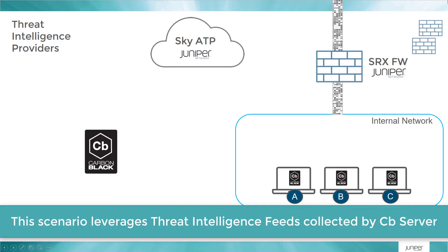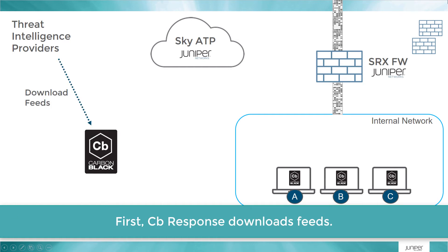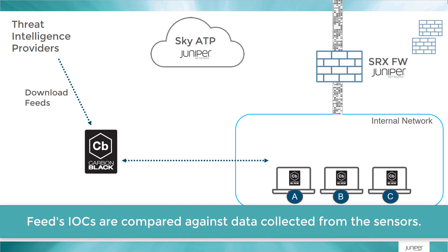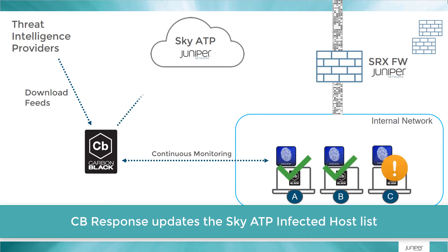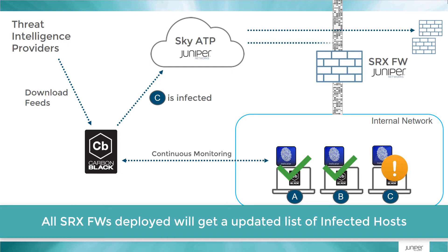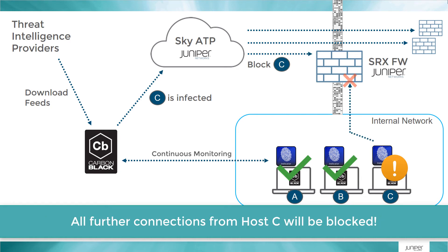This scenario leverages Threat Intelligence feeds collected by the Carbon Black server. First, Carbon Black response downloads feeds, and feed IOCs are compared against data collected from the sensors. Carbon Black response then updates the SkyATP infected host list, and all SRX firewalls deployed will get an updated list of infected hosts. All further connections from host C will be blocked.